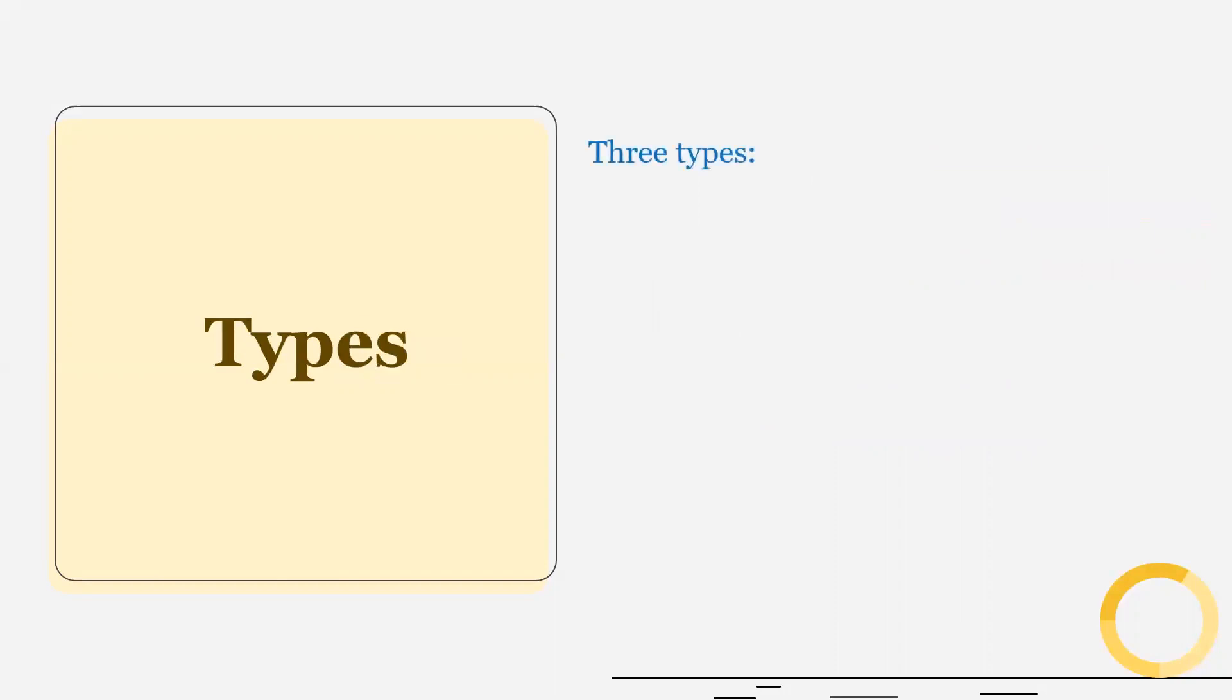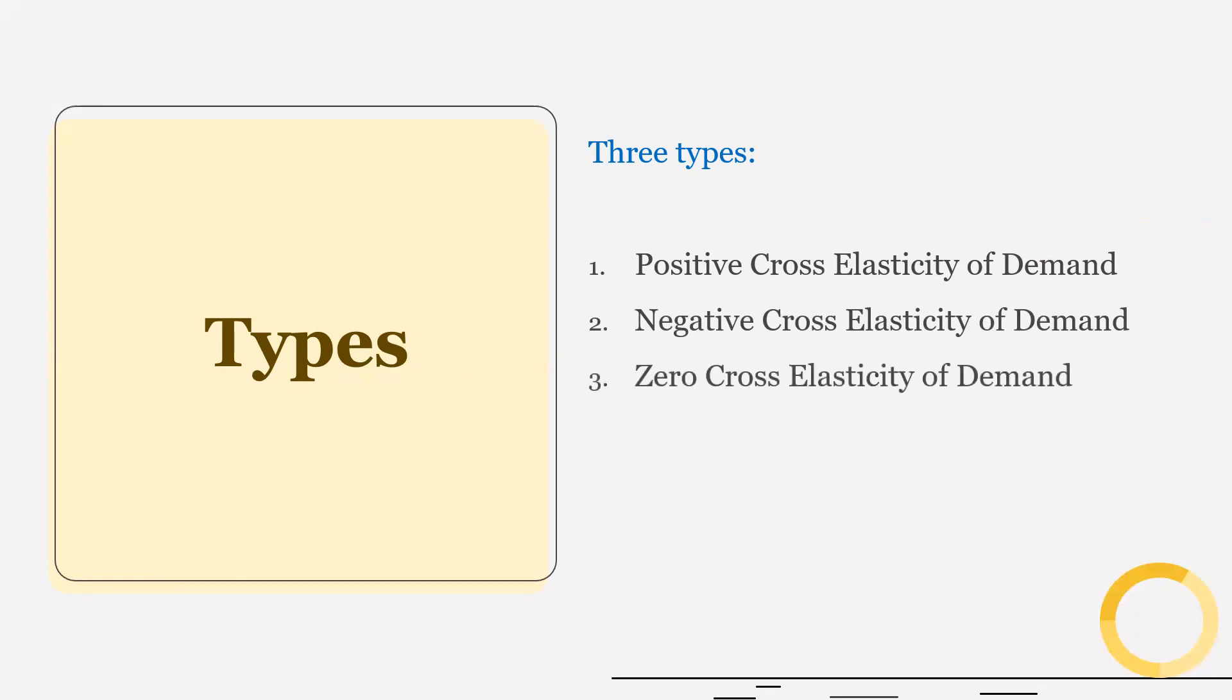Now we have three types of cross elasticity of demand. Positive cross elasticity of demand, negative cross elasticity of demand and zero cross elasticity of demand. So the value of cross elasticity of demand ranges from minus infinity to plus infinity.